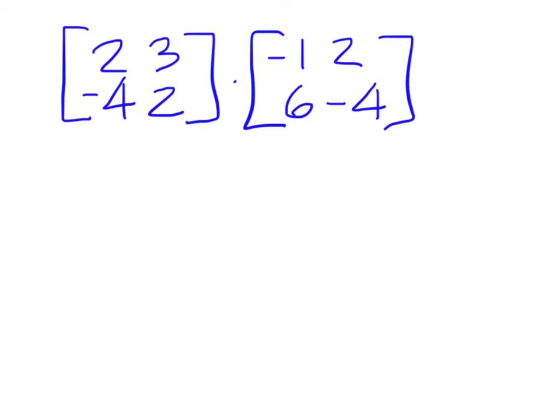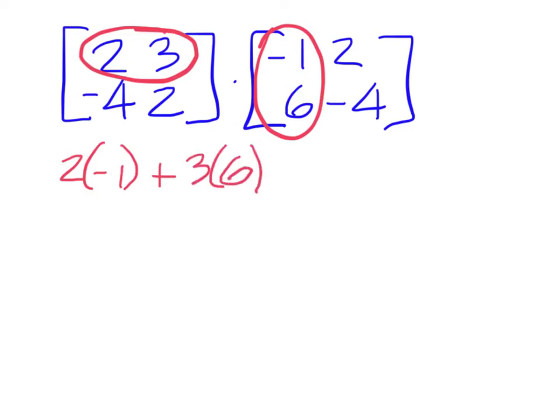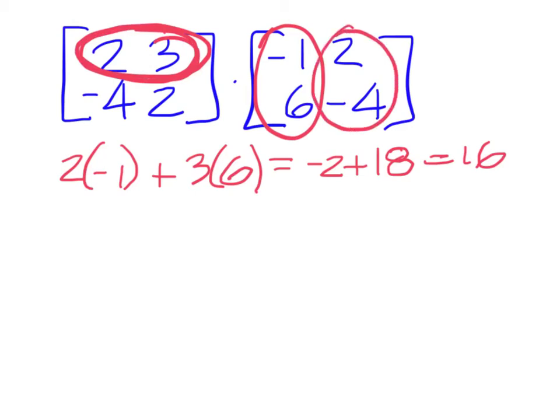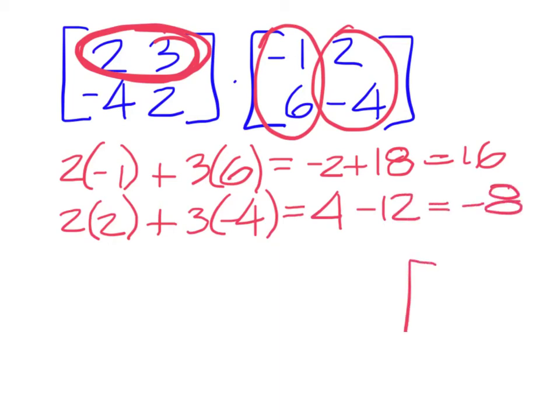This is an example. You start with the first row and multiply it against that first column. And you'll have the 2 times negative 1 plus 3 times 6. And come up with a negative 2 plus 18, which is 16. And then stick with that row, but move to the other column and do 2 times 2 plus 3 times a negative 4. So that's 4 minus 12, which is a negative 8. And remember where they go. It's the same way that you multiply them. Row 1, column 1, and then column 2.